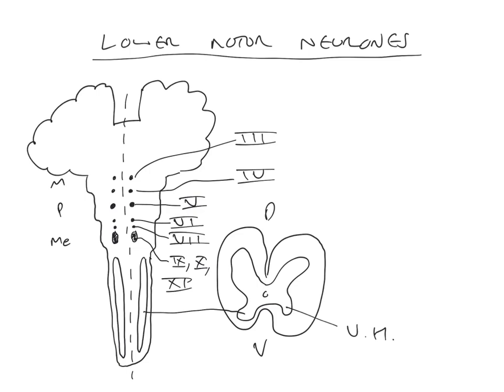Finally, the twelfth cranial nerve — the hypoglossal nerve — has its own nucleus in the caudal medulla containing lower motor neurons that distribute to the tongue. In summary, lower motor neurons are found within the spinal cord ventral horn and within a series of interrupted nuclei within the brainstem.